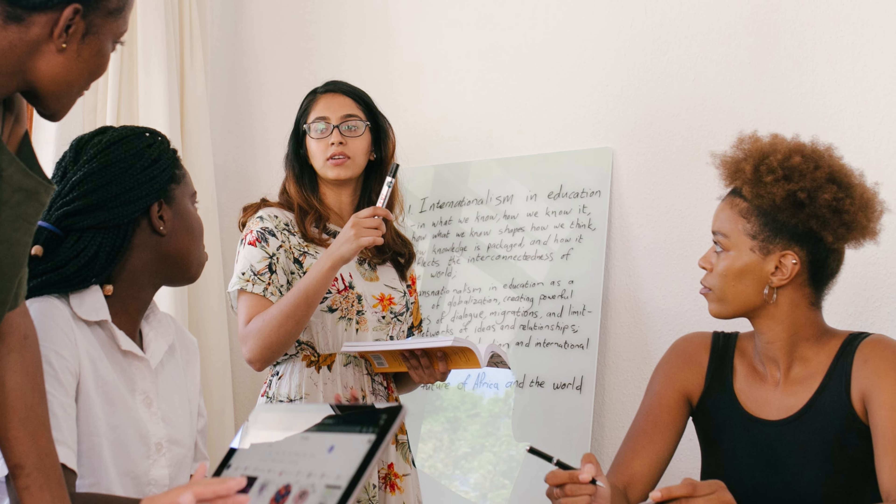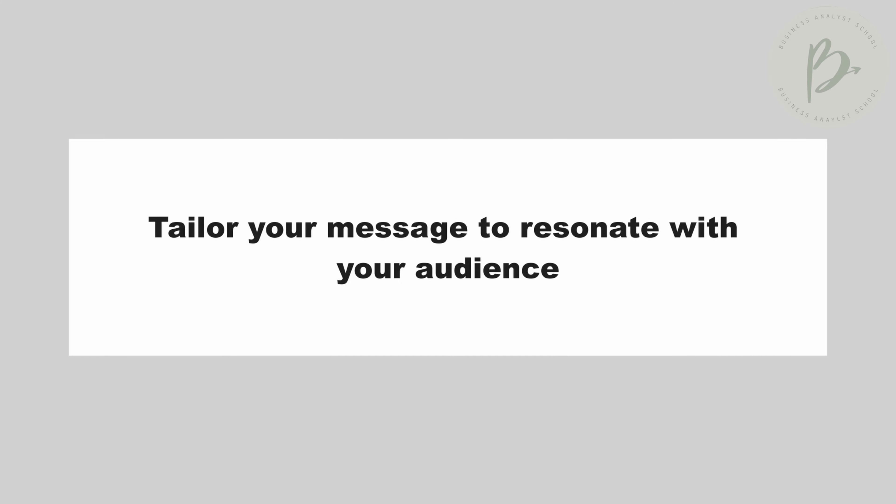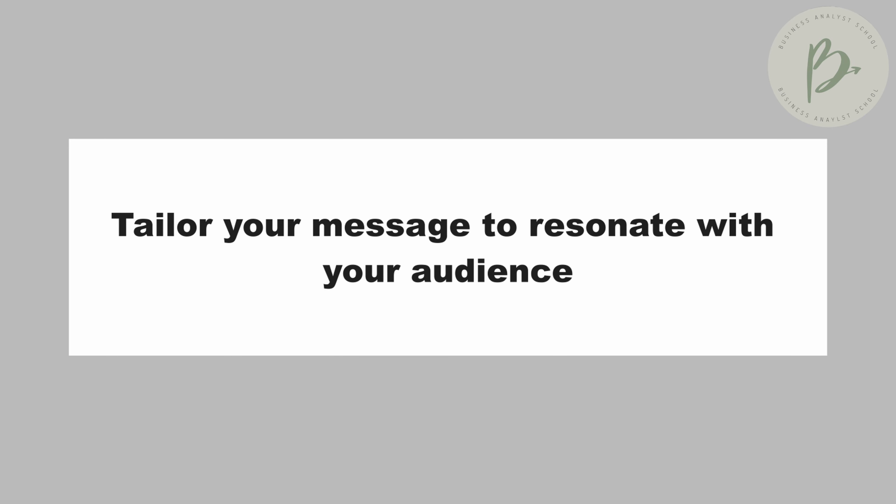So let's dive into how you can refine this essential skill set. The first thing you want to do to have great communication skills is to understand your audience — the people you're trying to communicate with. As a BA, you encounter a diverse range of stakeholders with different perspectives, from C-suite executives to software developers. Each group has its own language, perspectives, and priorities, so your first task is to tailor your message to resonate with that audience.